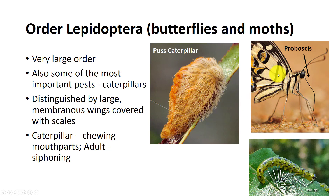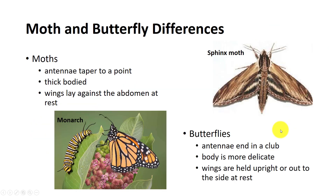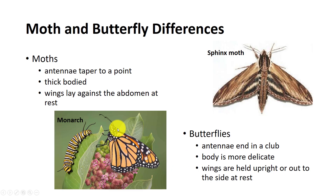Adult lepidopterans are well known for their scaled wings. The adult butterflies and moths feed by a siphoning tube, a proboscis that is coiled for storage. There are a few important differences between moths and butterflies. Moths have antennae that taper to a point and are thick-bodied with wings that lay against the abdomen at rest. You are likely to see more moths at night flying around. Butterflies tend to be out during the day, and their antennae end in a club, with a more delicate body and wings held upright or out to the side at rest.